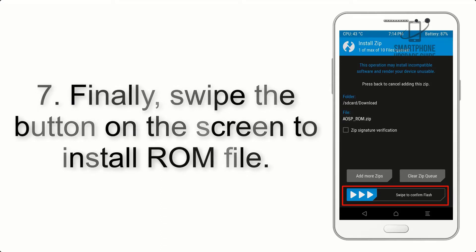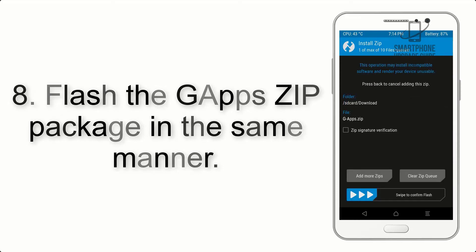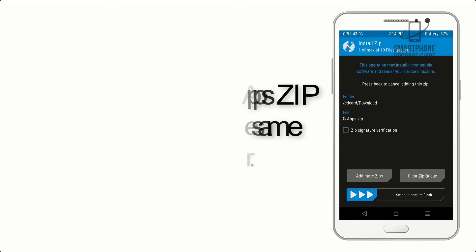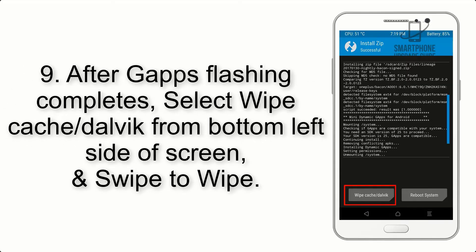Step 7: swipe the button on the screen to install the ROM file. Step 8: flash the GApps zip package in the same manner.